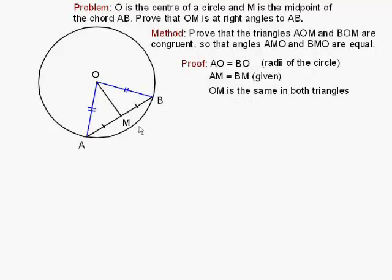And OM, well, it's the same in both triangles, so it must be equal to the same line. So, the triangles AOM and BOM are congruent. Why? Because of the SSS rule. Three sides the same. The two triangles must be congruent.